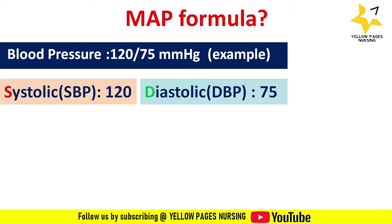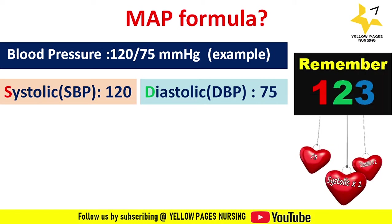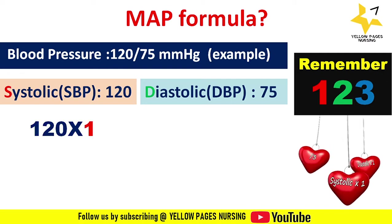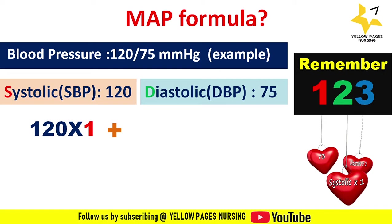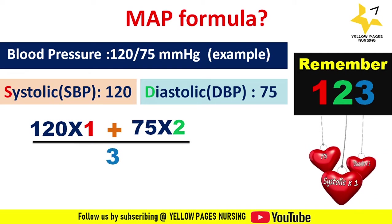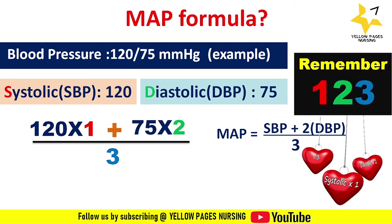The third step is the formula. To remember it more easily, use the number 1-2-3. 'S' for systolic stands for 'single' — systolic is multiplied by 1. 'D' for diastolic stands for 'double' — diastolic is multiplied by 2. This is divided by 3. So the formula is: MAP = (SBP + 2 × DBP) / 3.